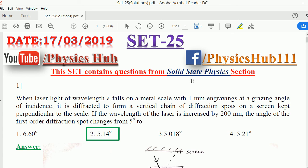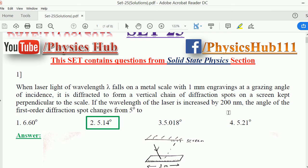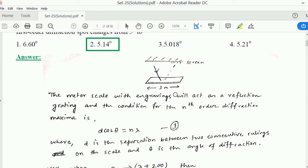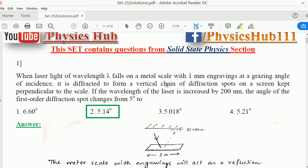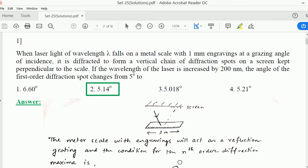So this is Set 25 and this set contains questions from solid state physics section. The first question reads: when a laser light of wavelength lambda falls on a meter scale with 1 millimeter engravings at a grazing angle of incidence, it is diffracted to form a vertical chain of diffraction spots on a screen kept perpendicular to the scale.